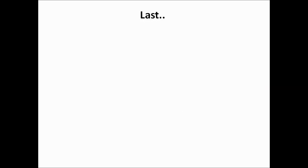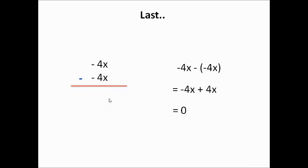One last example for better understanding: if there is negative 4X on top and negative 4X at the bottom, we have to subtract. We draw a straight line and put zero at the bottom. The reason is negative 4X minus, with this minus symbol, becomes plus — negative minus negative becomes positive — so negative 4X plus 4X equals zero. If you use addition here, you'd get negative 8X, not zero. Remember, we want to make the term zero in order to eliminate it.